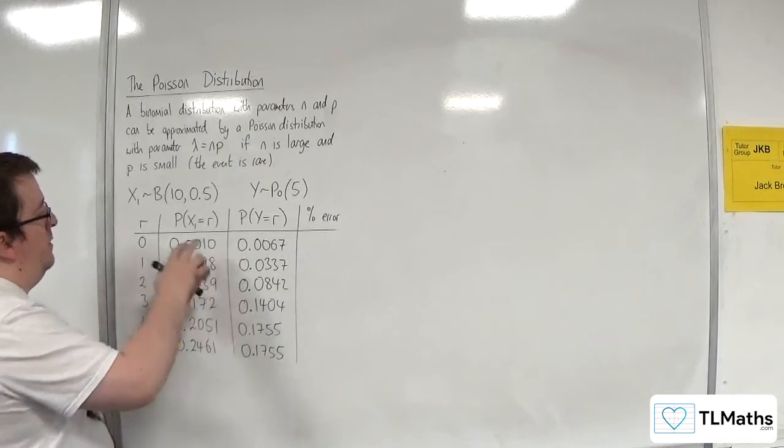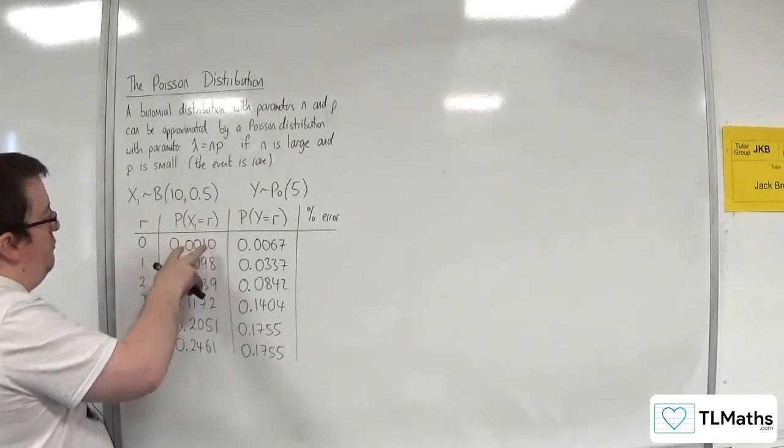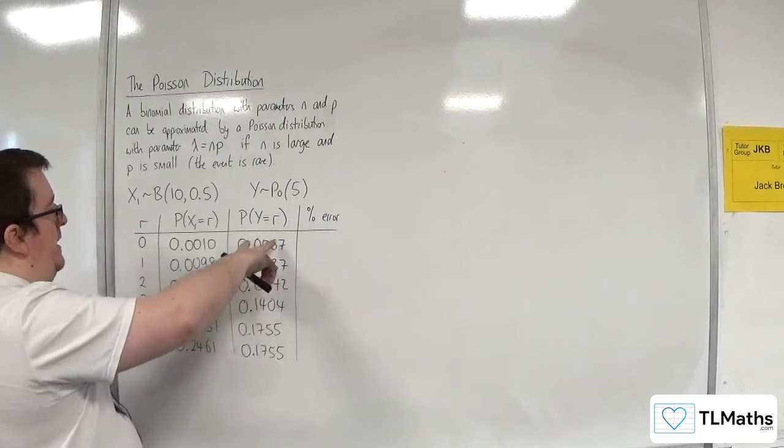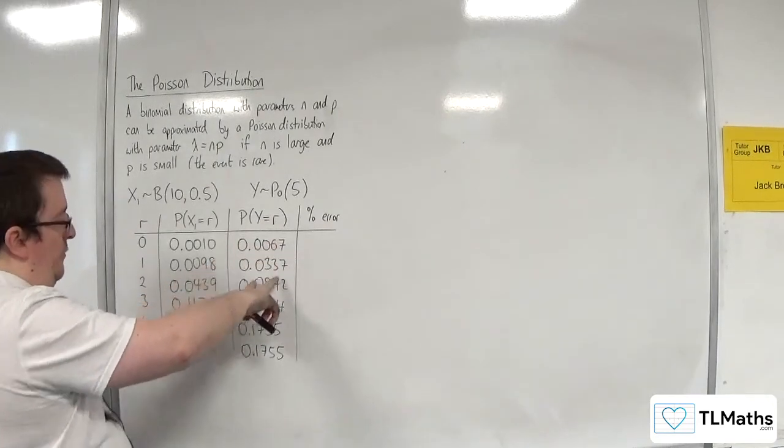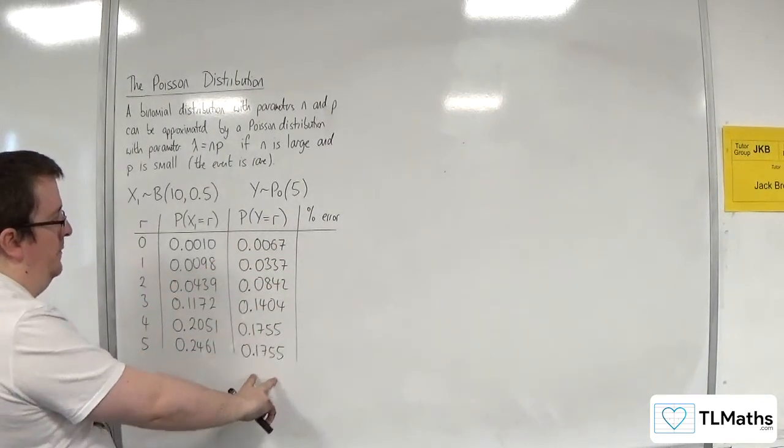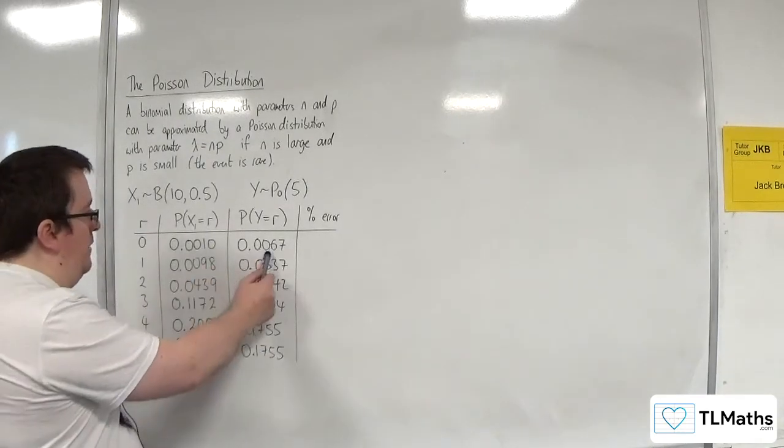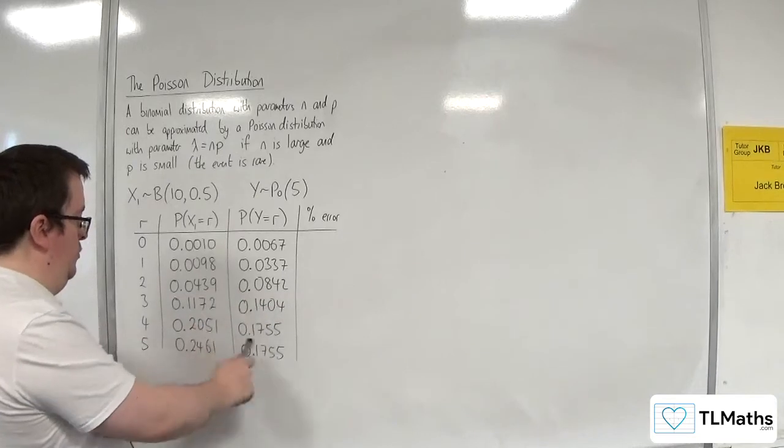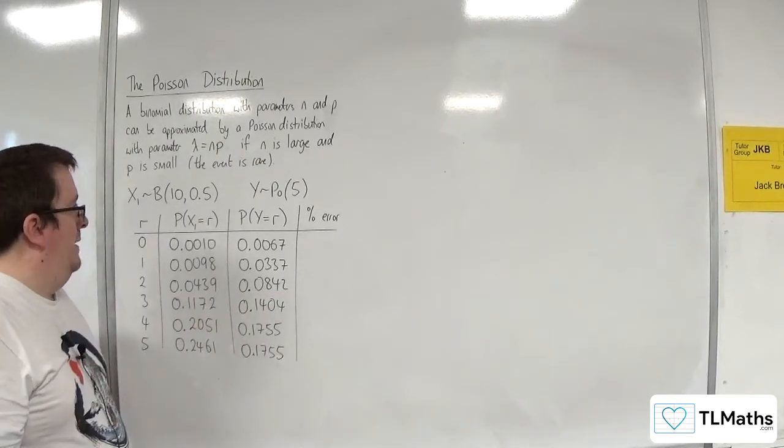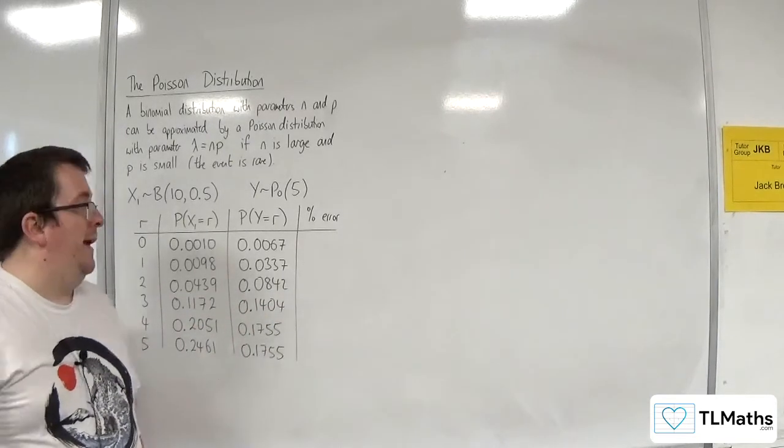So I've worked out the probability of x1 being equal to 0, 1, 2, 3, 4, and 5. And here are the probabilities of y being equal to 0, 1, 2, 3, 4, and 5. Now you can see, these aren't particularly good.